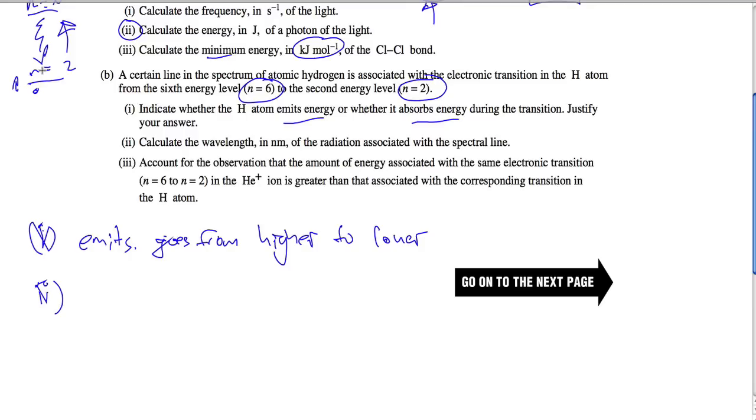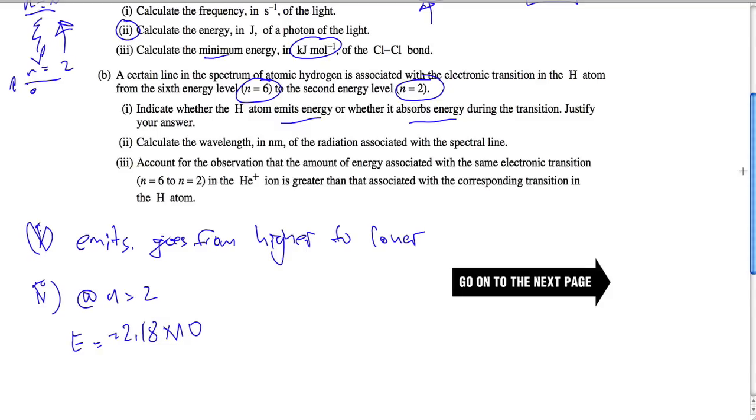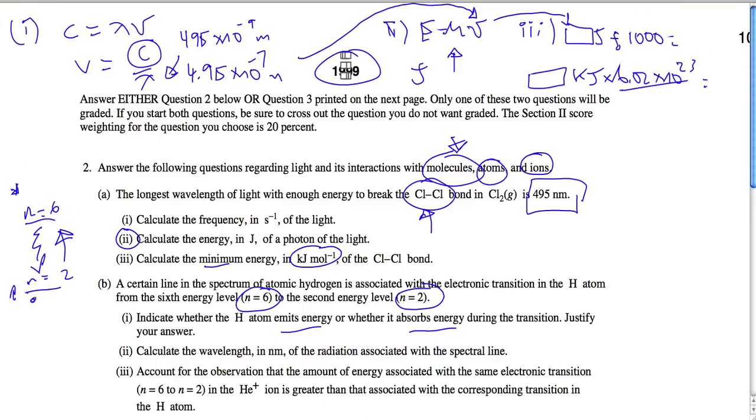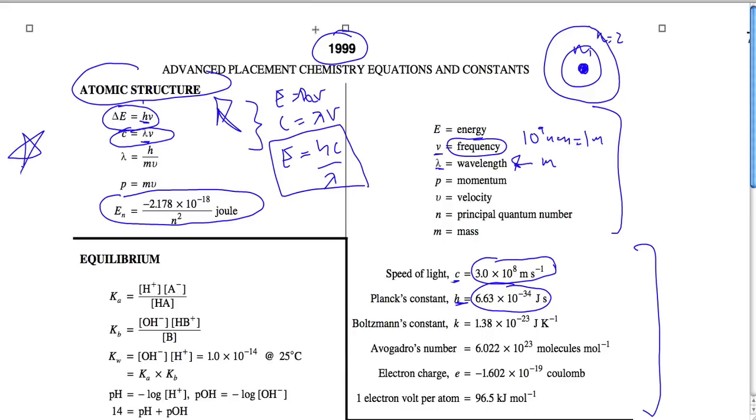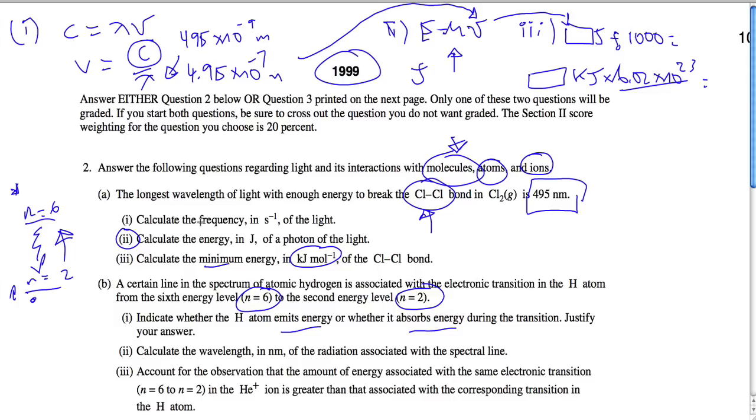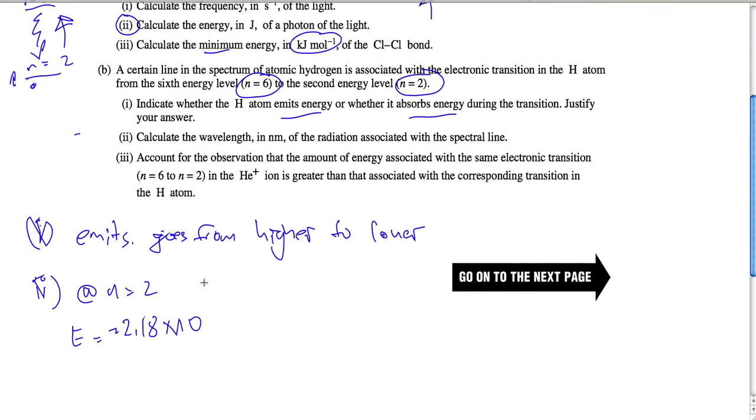To calculate the wavelength in nanometers associated with this spectral line, the first thing is we want to get the energy difference. At n equals 2, E is negative 2.178 times 10 to the negative 18 divided by n squared. So this is going to be 2 squared. And at n equals 6, it's the same thing, negative 2.18 times 10 to the negative 18 divided by 6 squared.